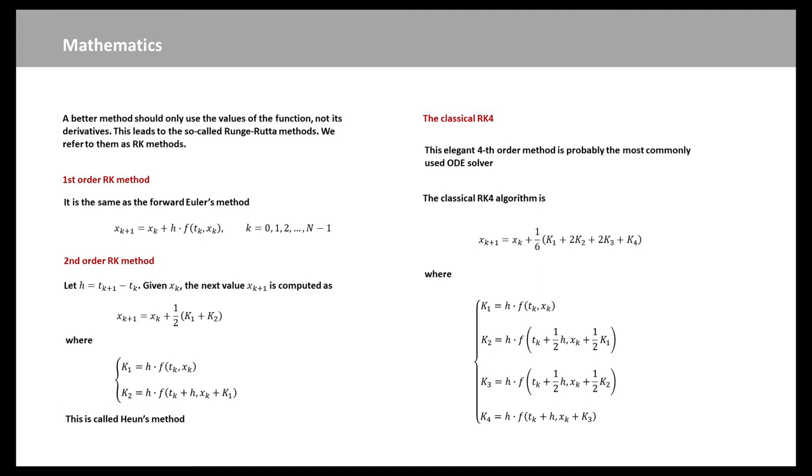Here, K1 is computed as h times f evaluated t_k and x_k. Then, K2 is computed as h times f at t_k plus half h and x_k plus half K1. This expression here is a good approximation of x' at t_k plus half h. And then, K3 is computed as h times f evaluated at t_k plus half h and x_k plus half K2. We see that this part of K3 here is a good approximation to x' at t_k plus half h. And finally, K4 is computed as h times f evaluated t_k plus h and x_k plus K3. We see that this part here in K4 is actually an approximation to x' at t_k plus h. So, we see the method actually has very nice coefficients and very elegant in the way.